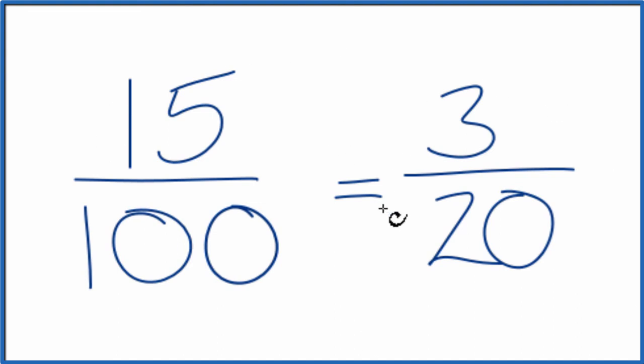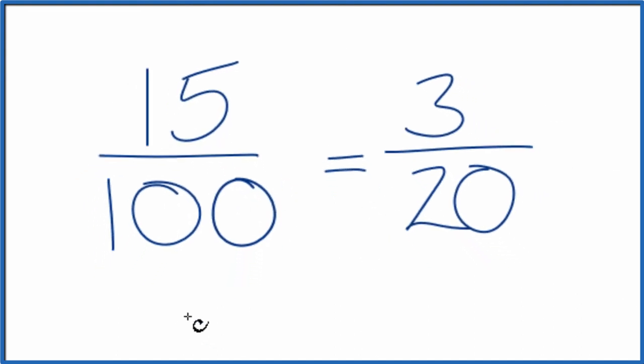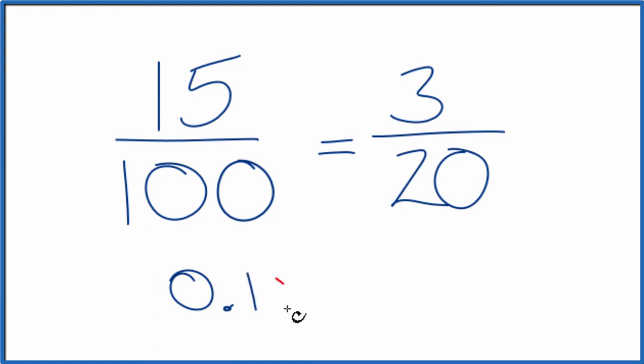These are equivalent. They have the same values. If you divide 15 by 100, you get 0.15. If you divide 3 by 20, you get 0.15.